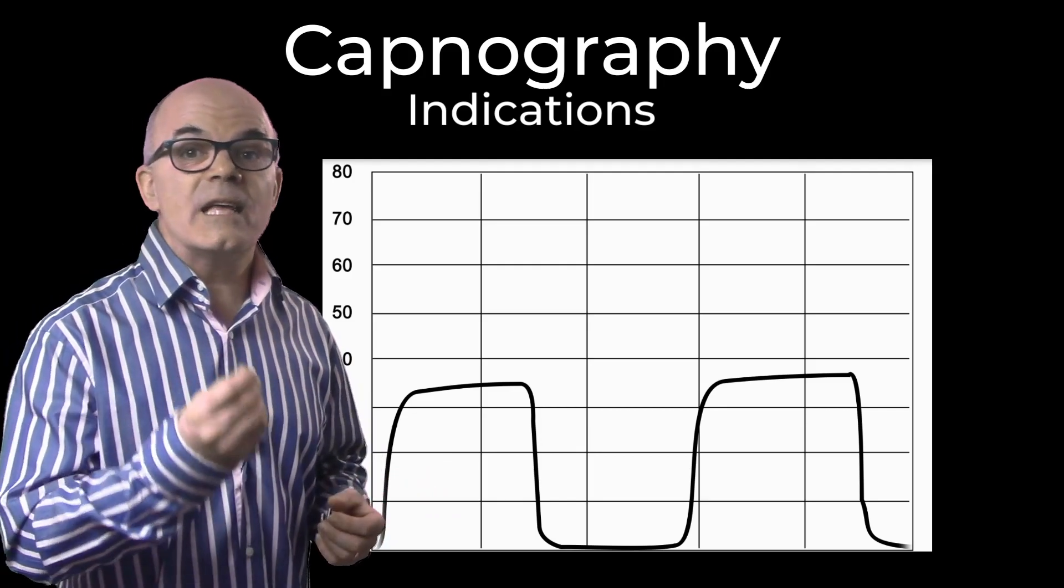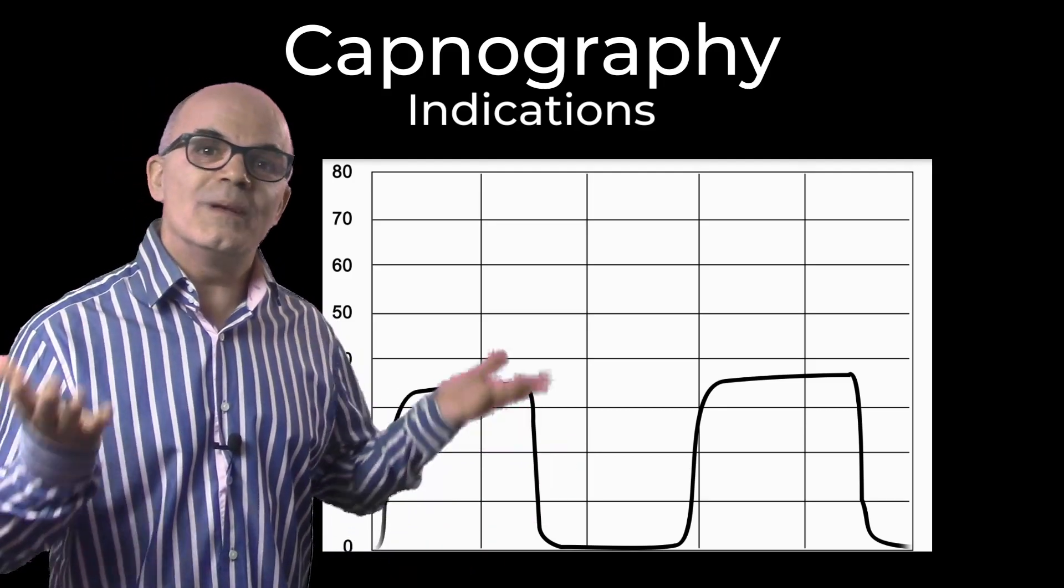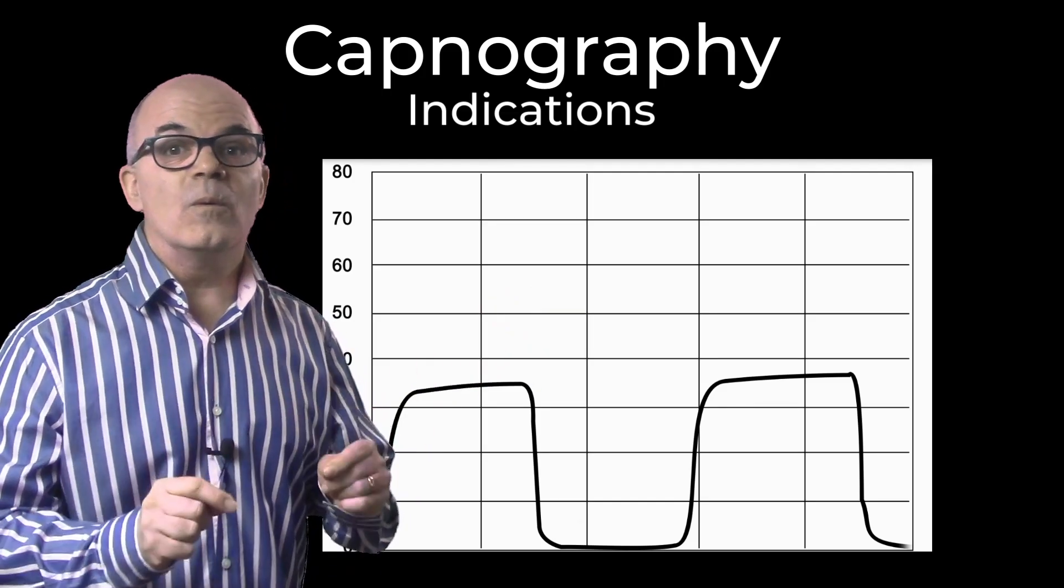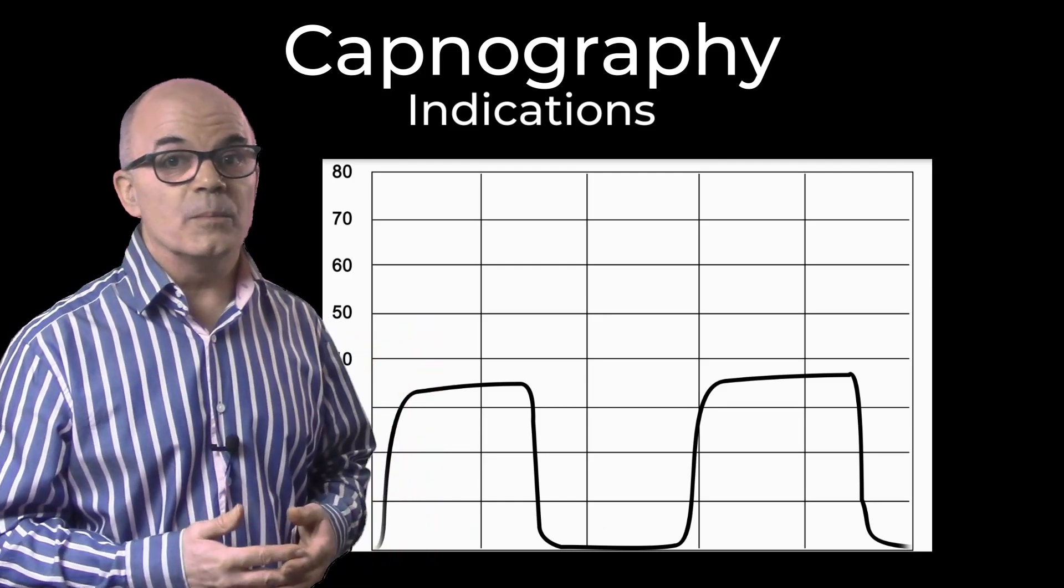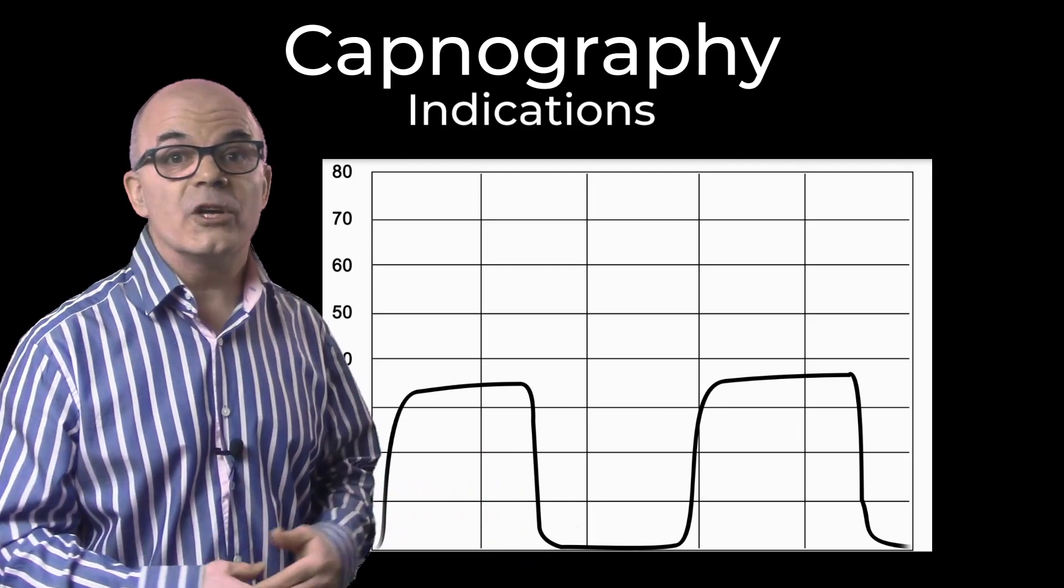It's wise to see several capnography waveforms before being happy that the tube is in the right place. Also be aware that the trace may be even harder to interpret if the patient is in cardiac arrest due to the poor venous return.